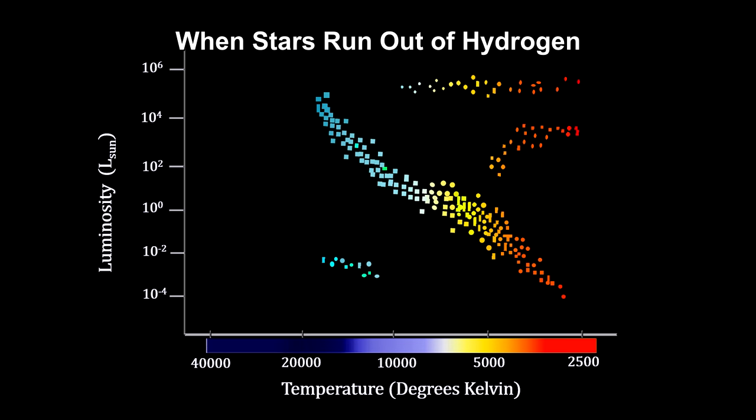On the HR diagram, we see that the star leaves the main sequence and moves upward to the right because it's brighter and to the right because it's cooler. Detecting this is then a matter of finding stars in a cluster leaving the main sequence.